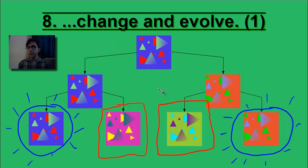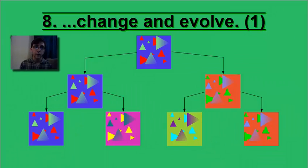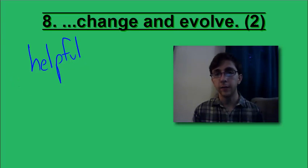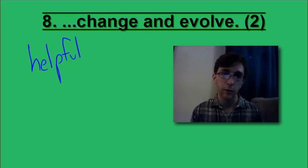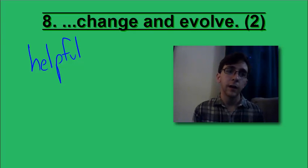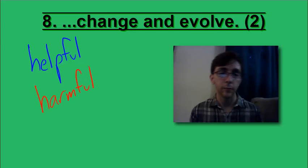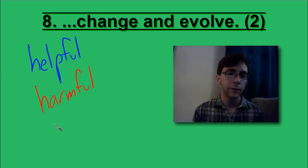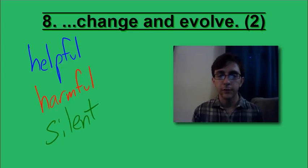So why do we care about mutations and how does it help organisms to evolve? There are a few different kinds of mutations. We can have helpful mutations, mutations that create traits that somehow help us, like if an organism mutates to become stronger or faster. You can have harmful mutations, such as mutations that cause organisms to become weak or slow. You can also have silent mutations. Silent mutations don't really help or hurt anything. They don't really matter.